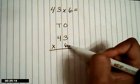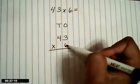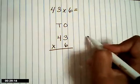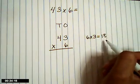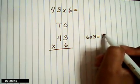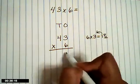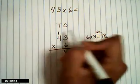6 times 3, and I'm just writing this on the side so you can see it. 6 times 3 is 18. Keep the 8. Regroup the 1.